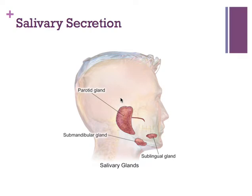Now we're moving on to each area in the GI tract and its specialized secretory activity. We'll start in the mouth with salivary secretion, which is an important process.